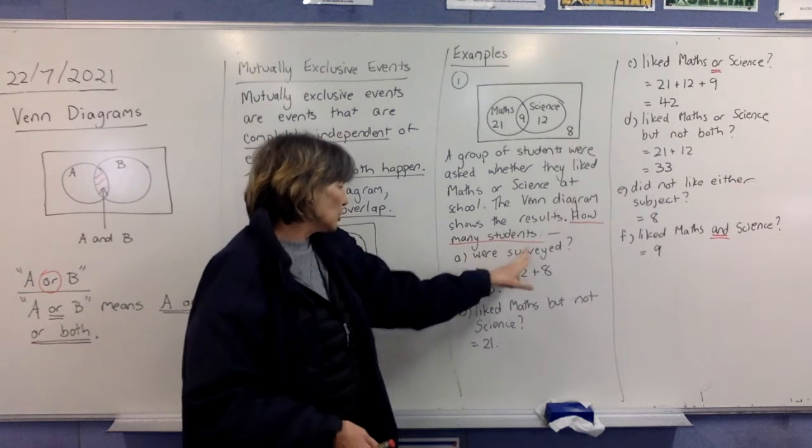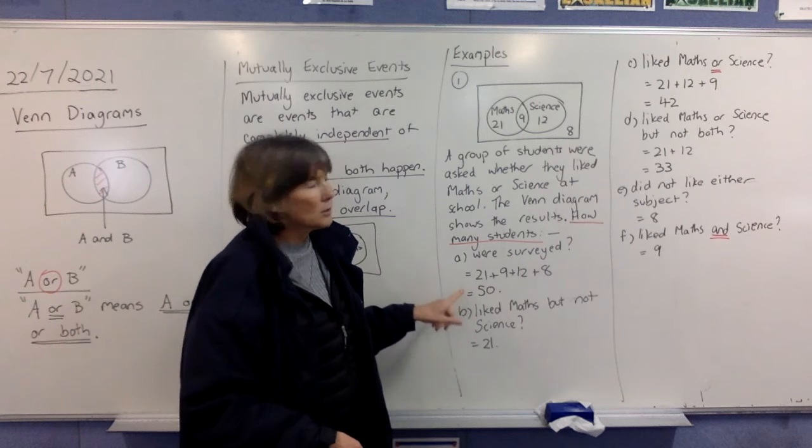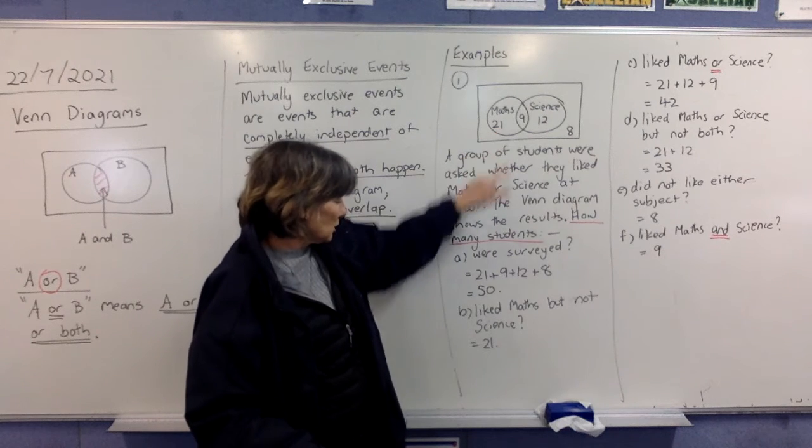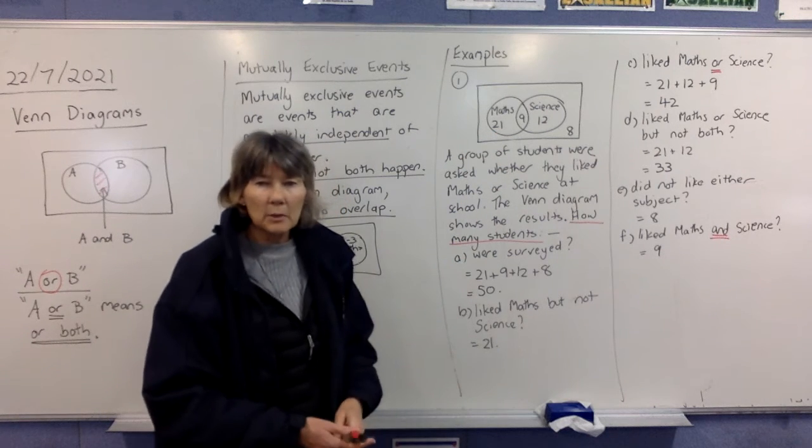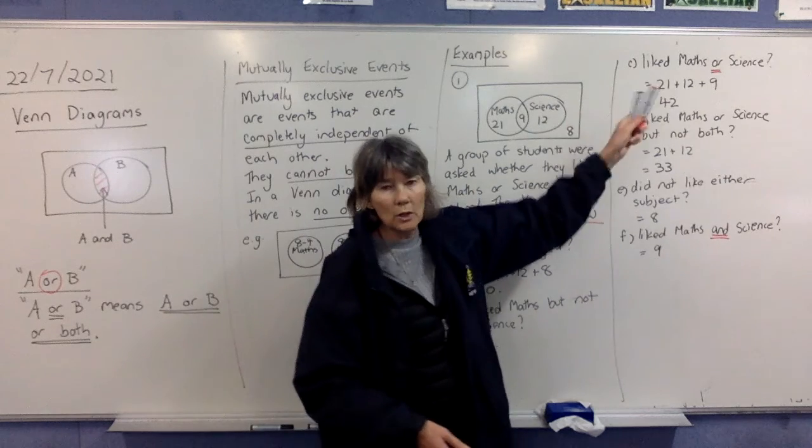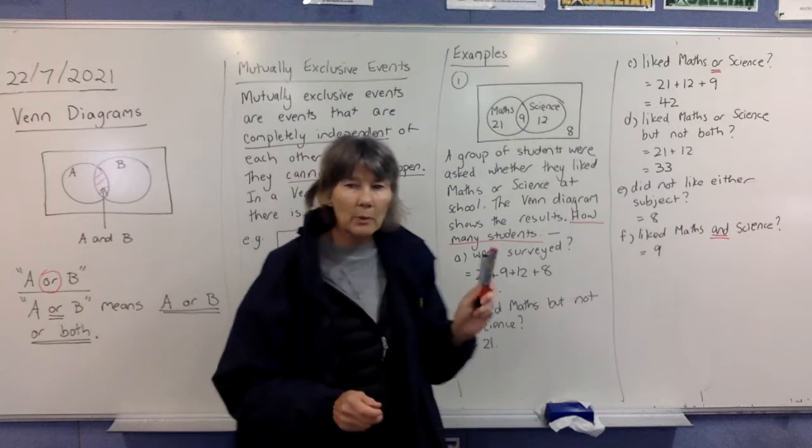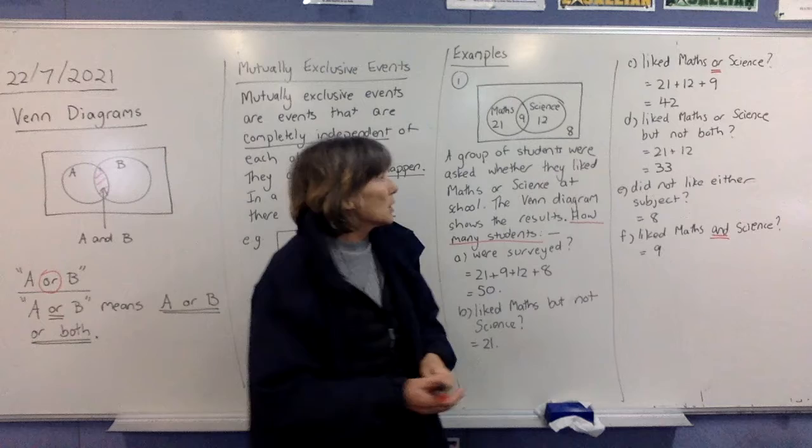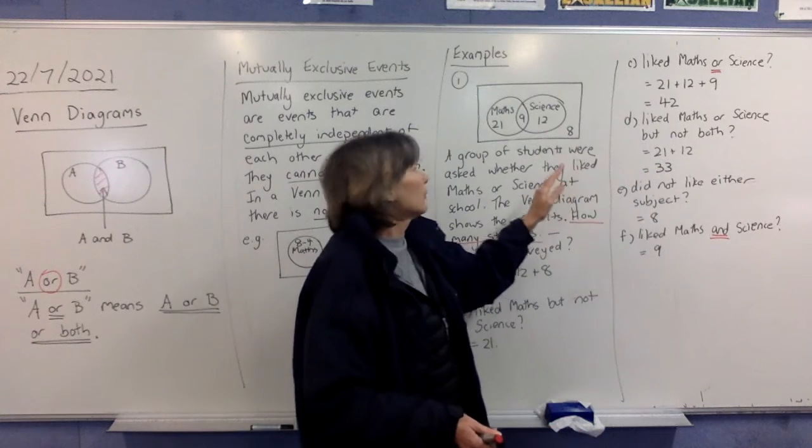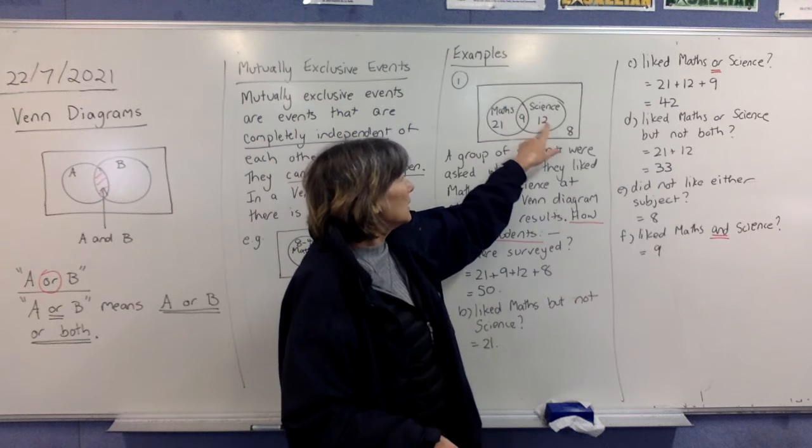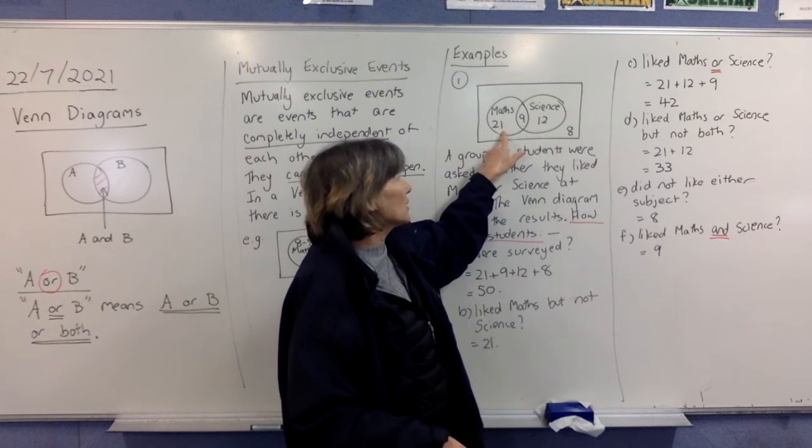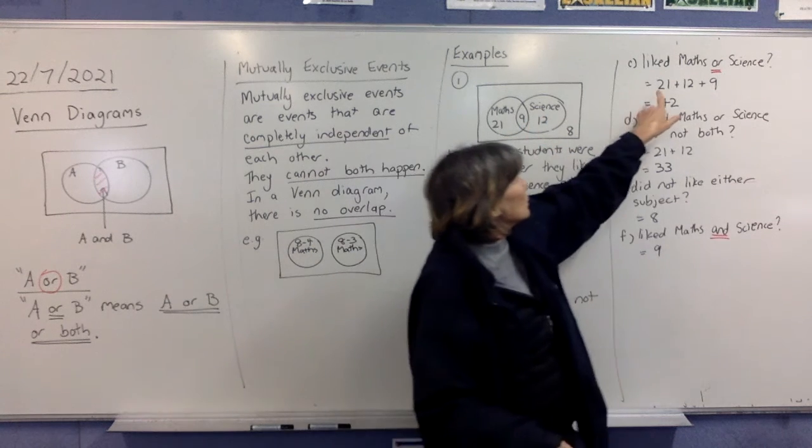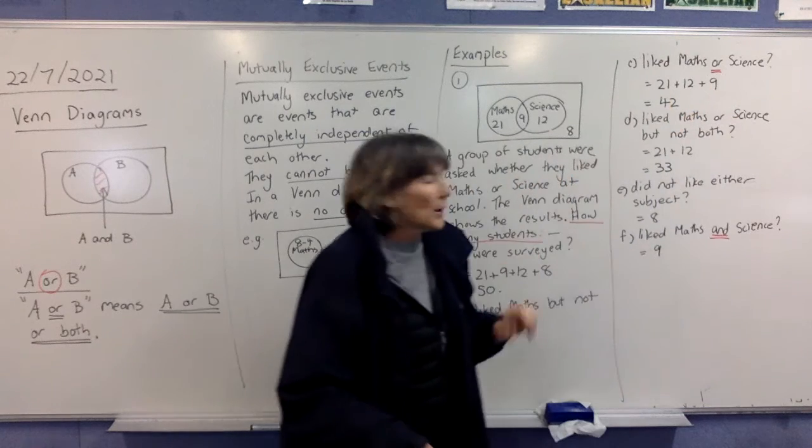Now the next question says, liked maths or science? Now this is the tricky one, right? So remember what or means. Or means A or B or both. So we want maths or science or both. So here's the maths, 21. Here's the science, 12. So that's maths only and science only. But we also have to add in the 9 that liked both. So 21 plus 12 plus 9 and add those up.